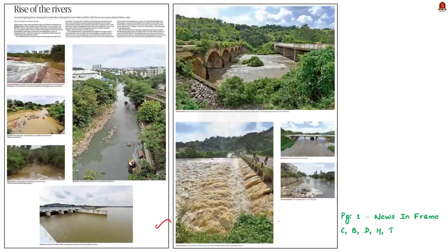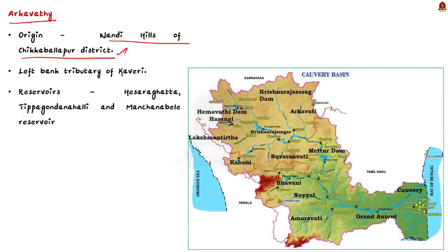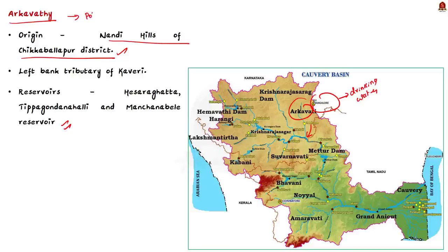These beautiful images show the lost rivers of Bengaluru — back to full glory after recent Bengaluru rains. Images of river Kanwa, Arkavadi and Vrishabavadi are shown. Let us see a few facts about these rivers from a prelims perspective. Arkavadi originates in the Nandi hills of Chikkaballapur district and is one of the left-bank tributaries of Kaveri. Historically, it has been used as a source of drinking water in Bengaluru, filling up the Hesaragatta, Tippagondanahalli and Manchanabele reservoirs, which in turn supply water to Bengaluru. After the 1980s, with rapid urbanization, the river lost its glory due to pollution and encroachment.